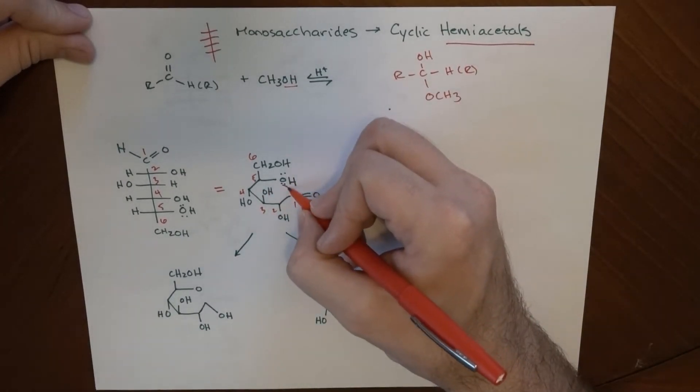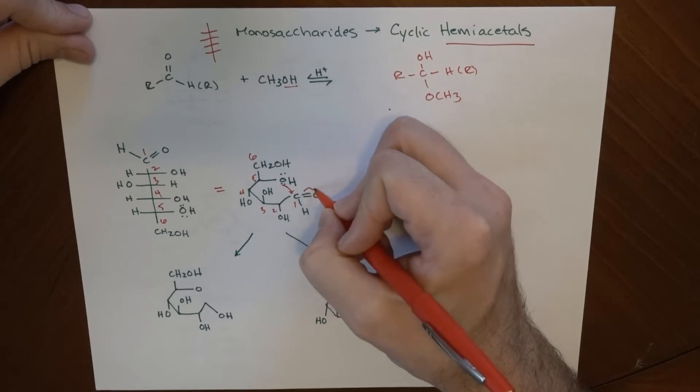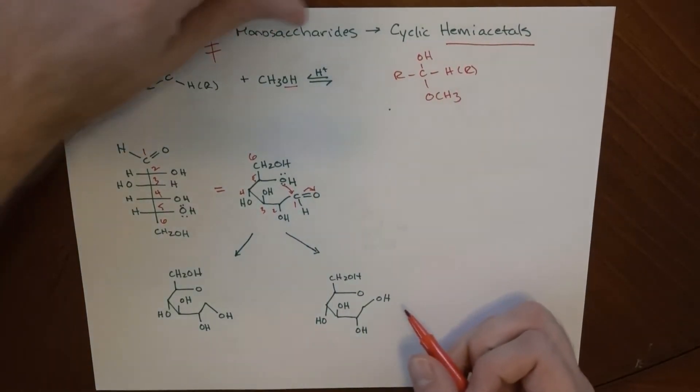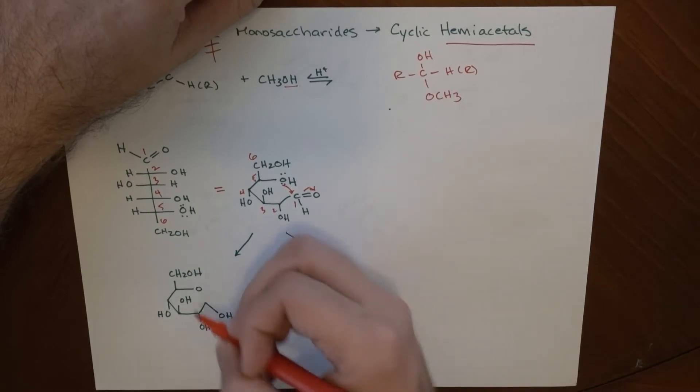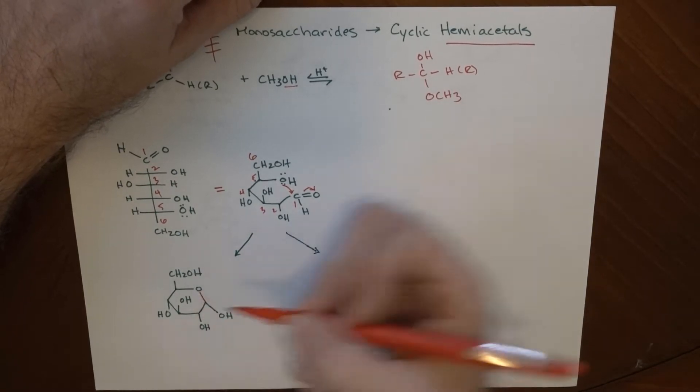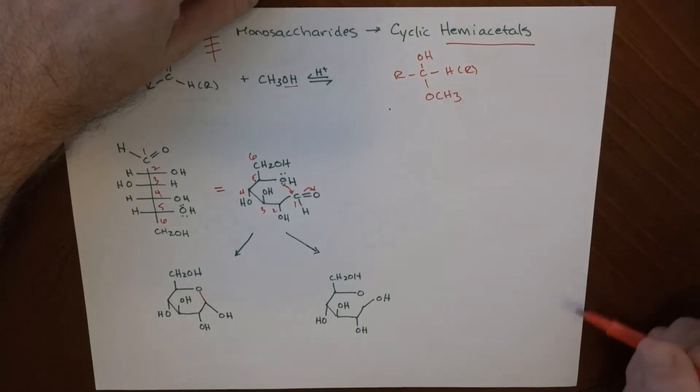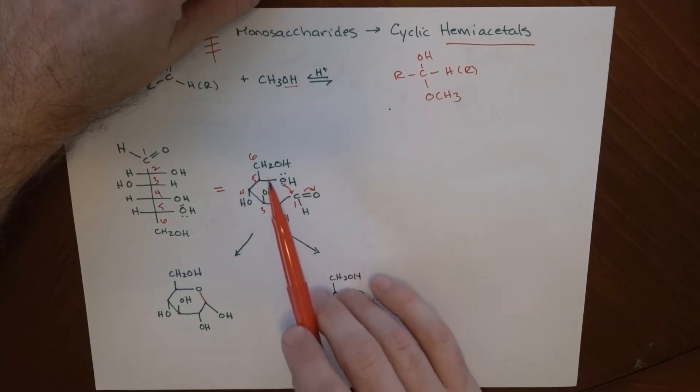Now, the electrons here are going to grab onto this, kicking these electrons out, and it's going to end up making a new bond here. So now I've got a cyclic molecule, and all the stereochemistry and everything else has stayed the same.